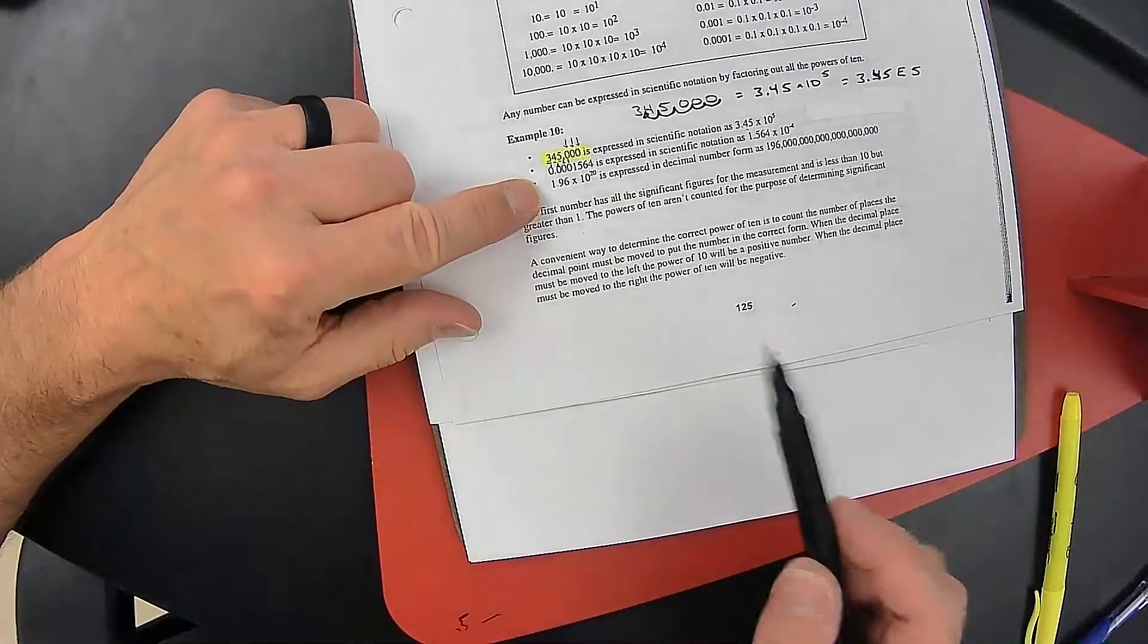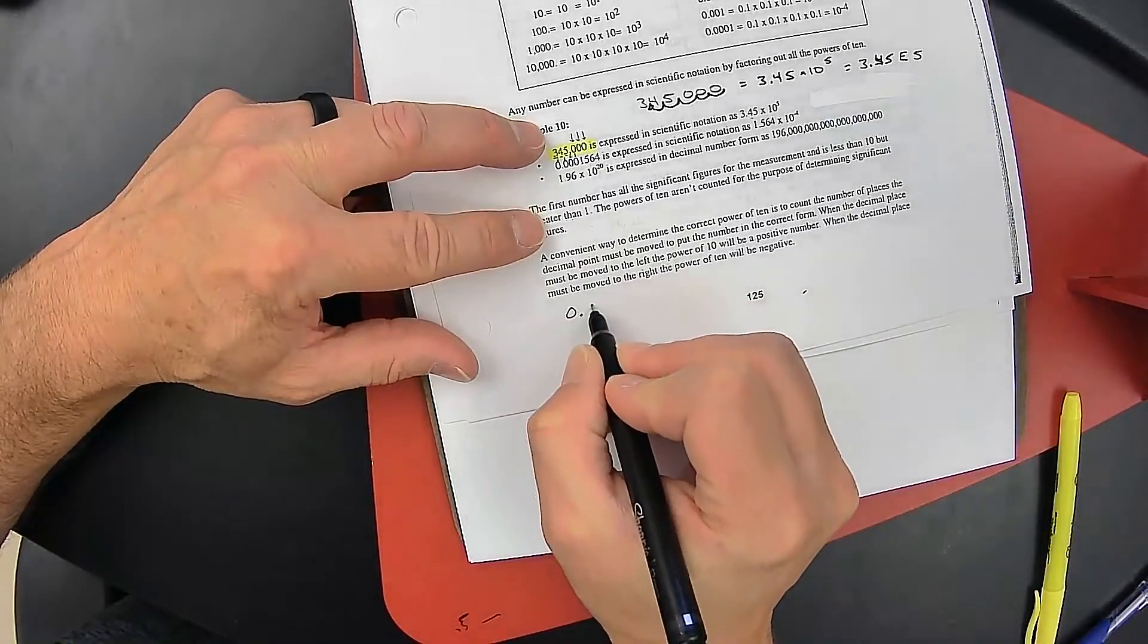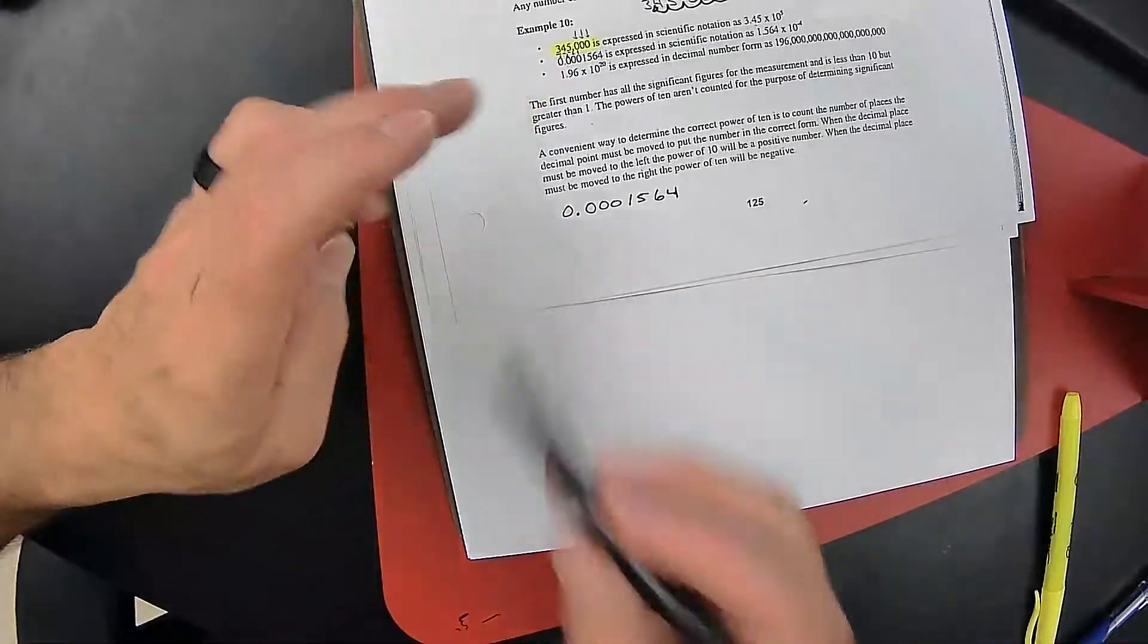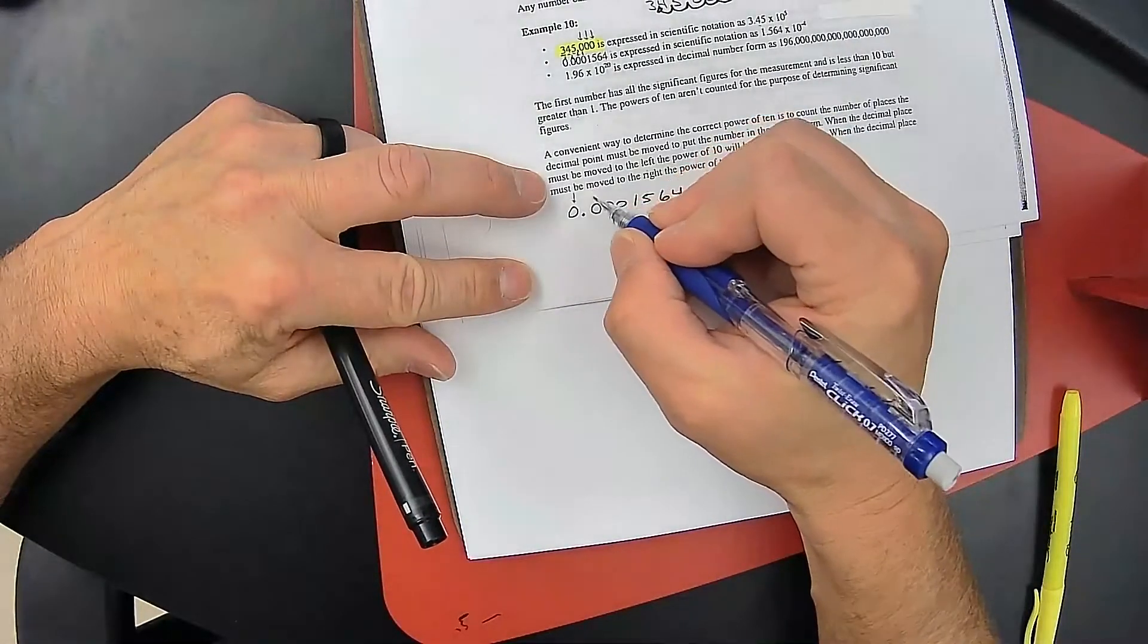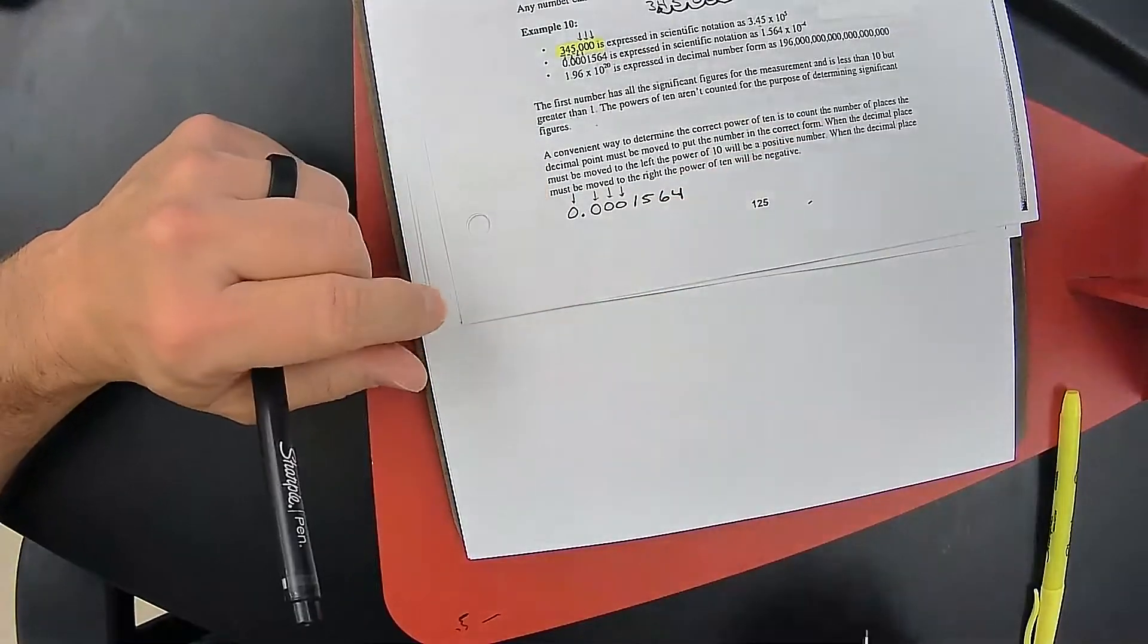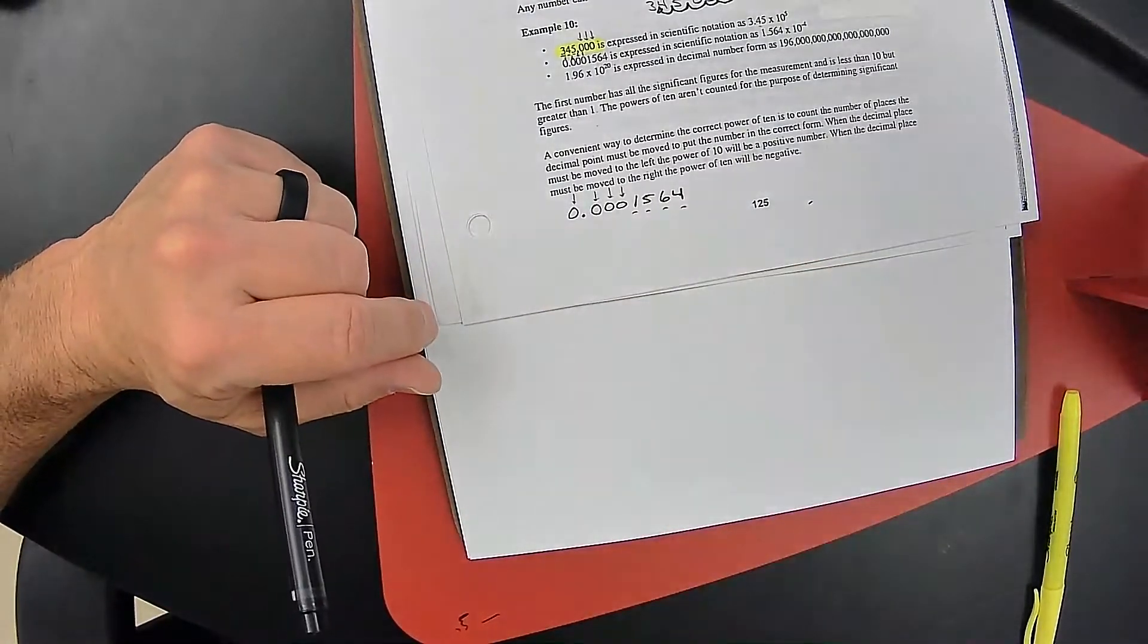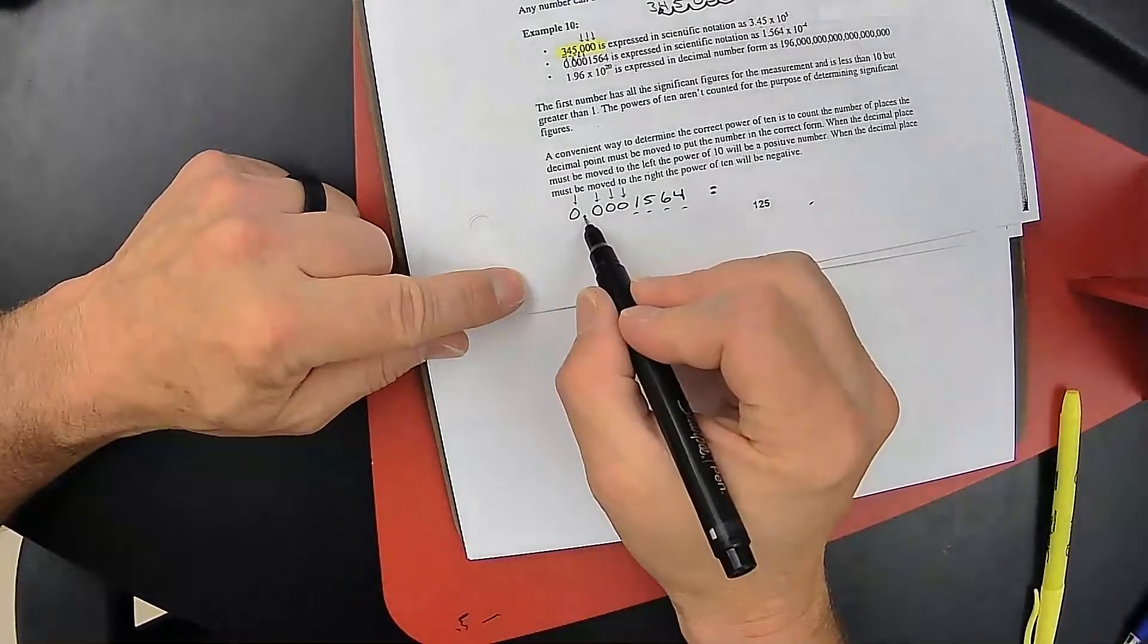In the second example, when we look at this number here, it's very important to note that all of these zeros are leading zeros. They are placeholders. Leading zeros are never significant so it's only these digits here that are significant. So when I'm taking my decimal and I'm moving it over,